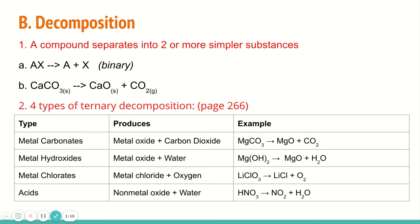Next type is decomposition. This is basically the opposite of synthesis. If synthesis is taking two substances and making them into one, decomposition is taking one substance and breaking it up into its components. Binary, the most simple form, is what you see in example A where it says AX yields A plus X. It does exactly that. It breaks the compound, the binary compound, so two elements within that compound into the two individual elements.